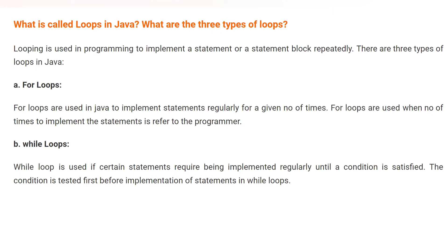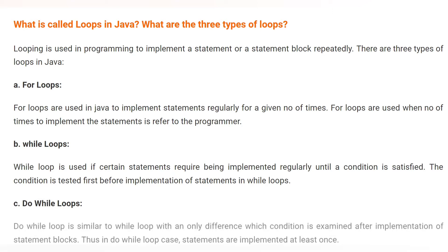We will see in the demo how to use these loops. The last one is the do-while loop, which is similar to the while loop, with the only difference being that the condition is examined after the implementation of the statement block. In the do-while loop, statements are executed at least once, whereas in the while loop, statements may not execute even a single time.